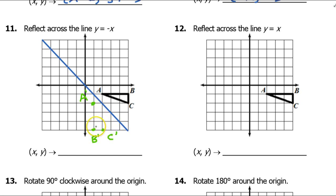So that gives us the image — all we have to do is connect the dots. When you step back and look at it, you can see that the green one is the mirror image of the black one, if the blue line is the mirror.